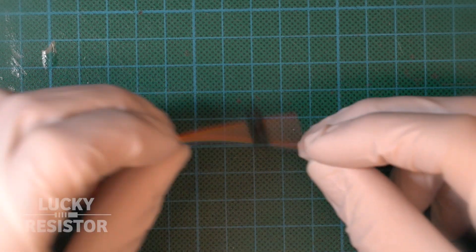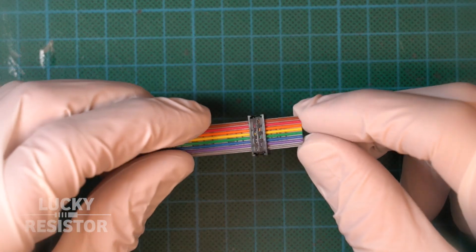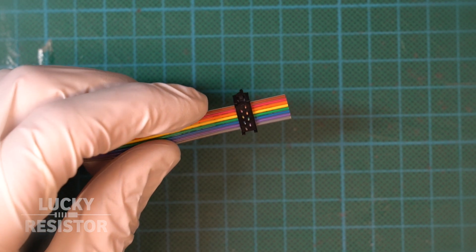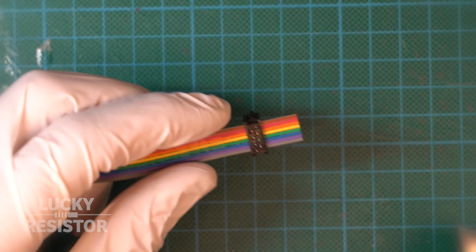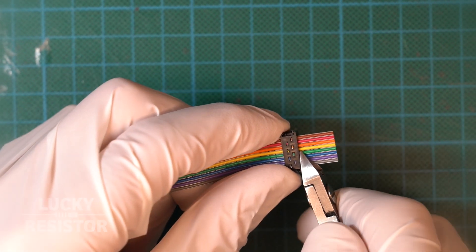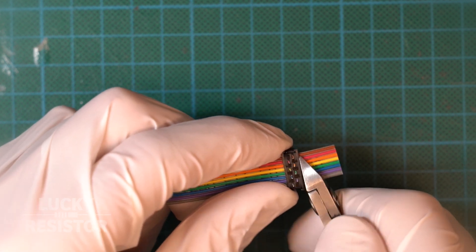Next, check if the two shells of the connector clicked into place. Also, the insulation of the wires should have been pressed into the small slots at the top equally. Use a side cutter to remove the excess cable.